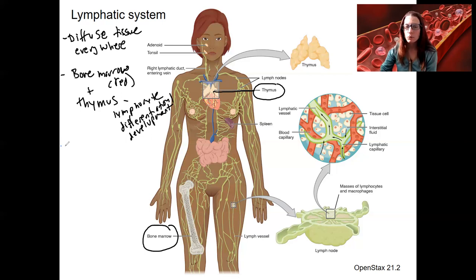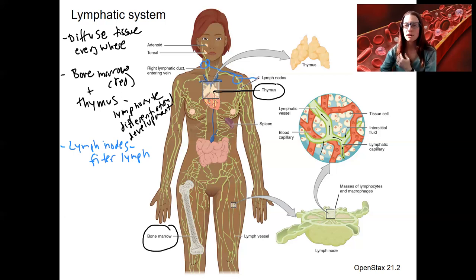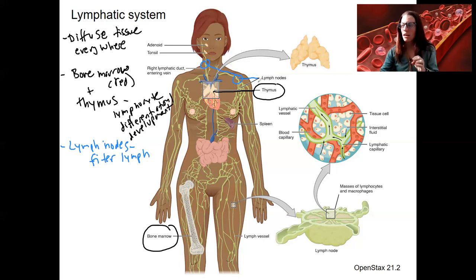Next we've got lymph nodes. These are filters — they are going to remove debris and pathogens from the lymph. These are located throughout the body. You may know you have some right here that you can often feel when you're sick. Lymph nodes are part of the vessels, but they have specialized structures that allow them to filter, and that histology is important for immune function. That's why they swell when you're sick or fighting something.